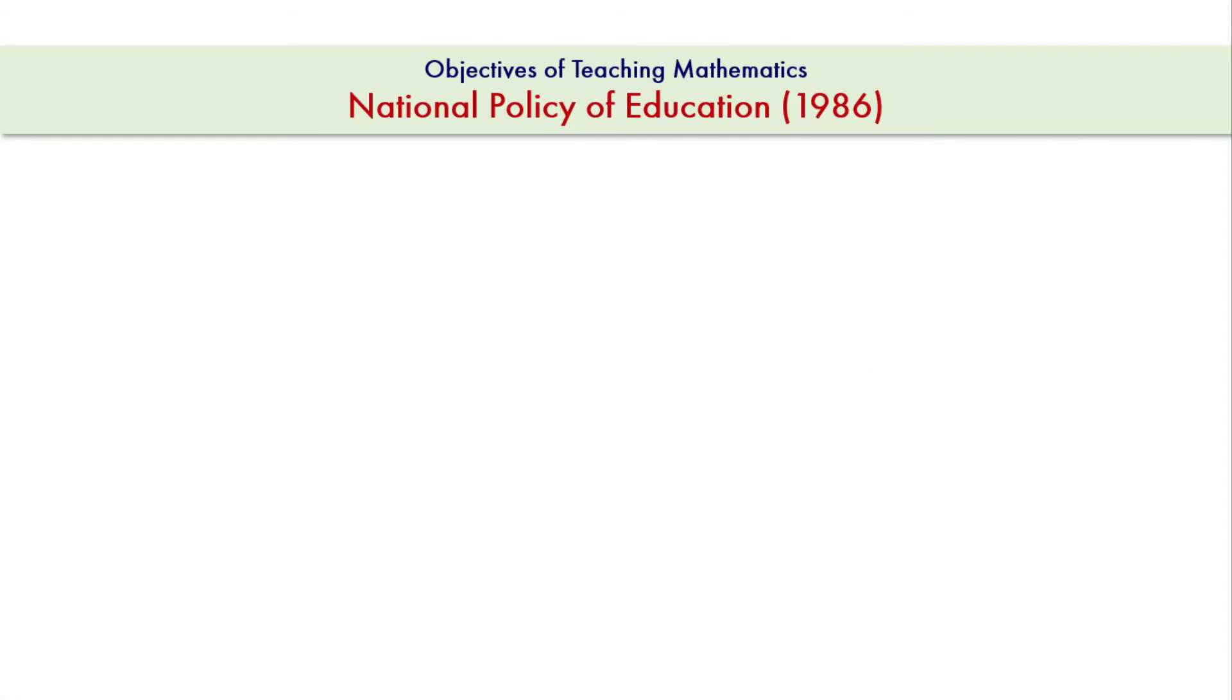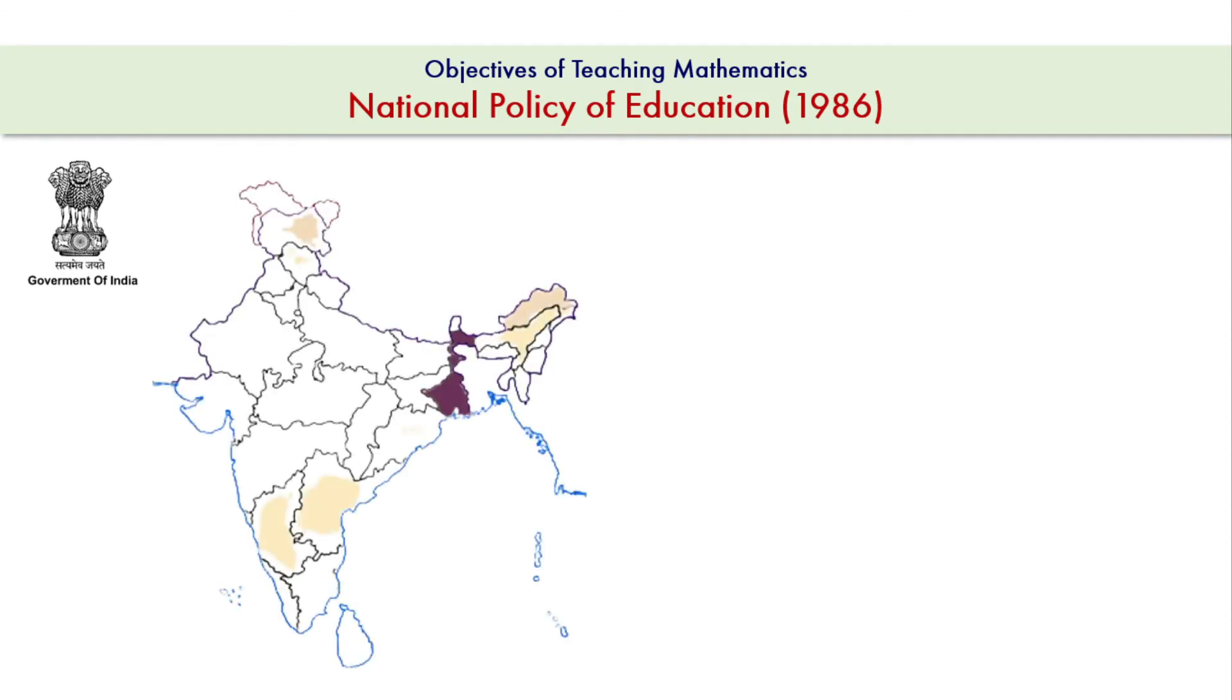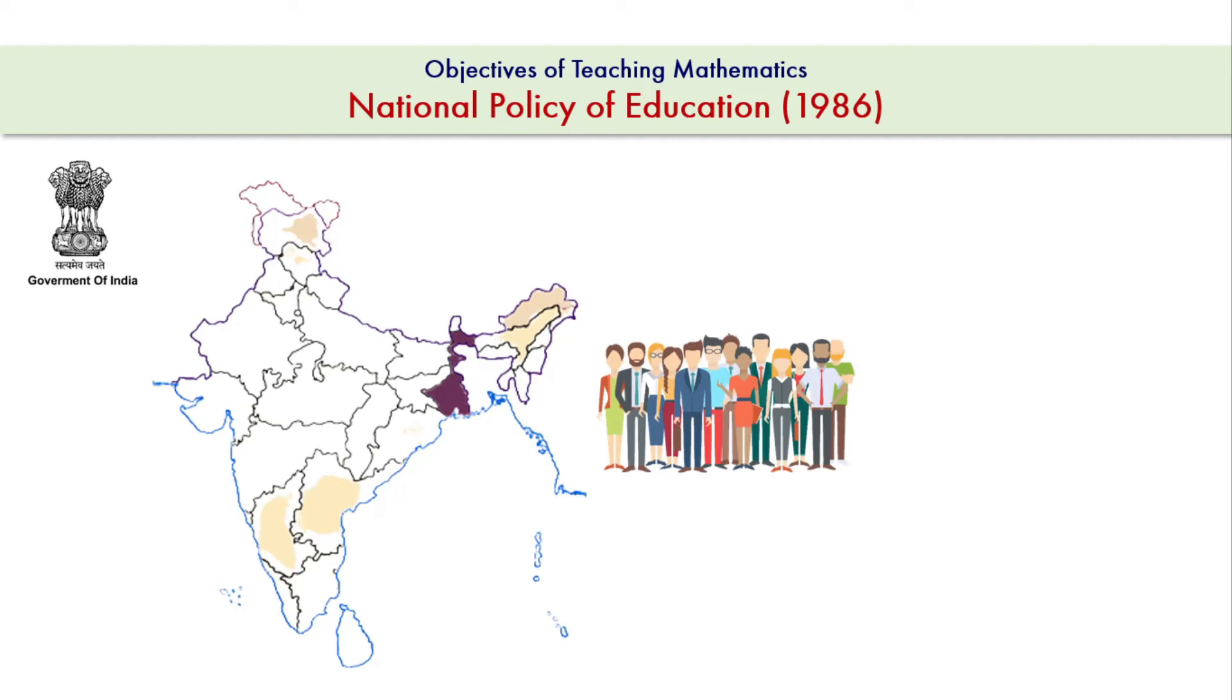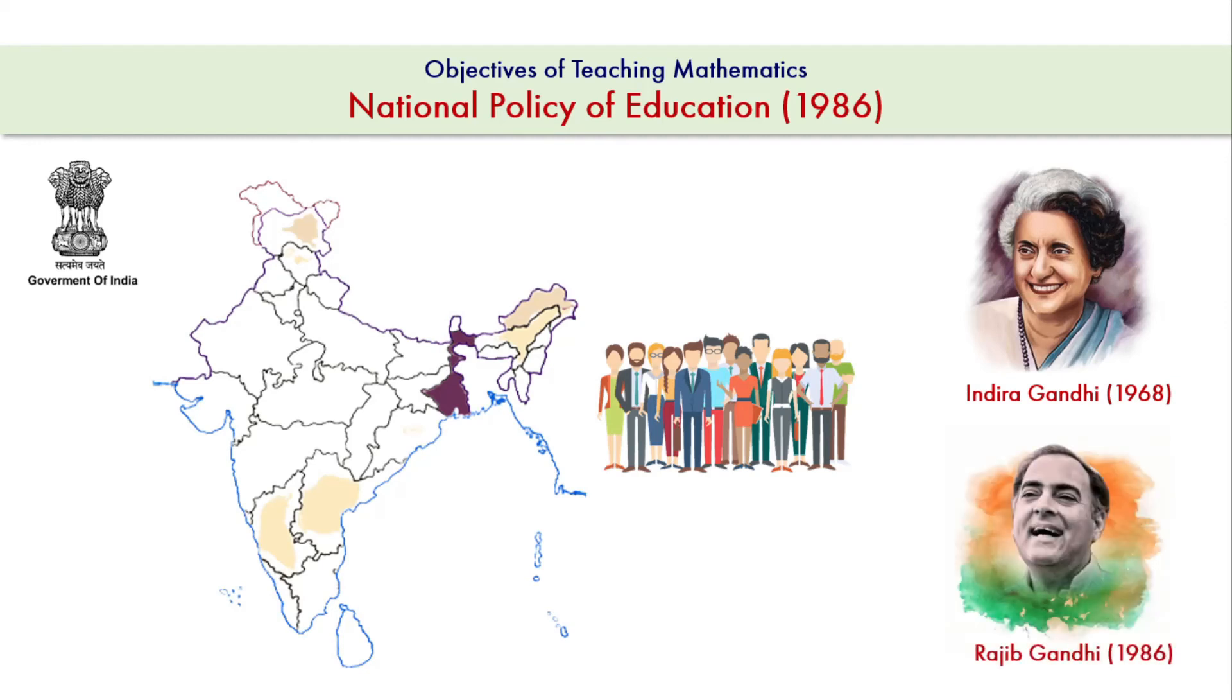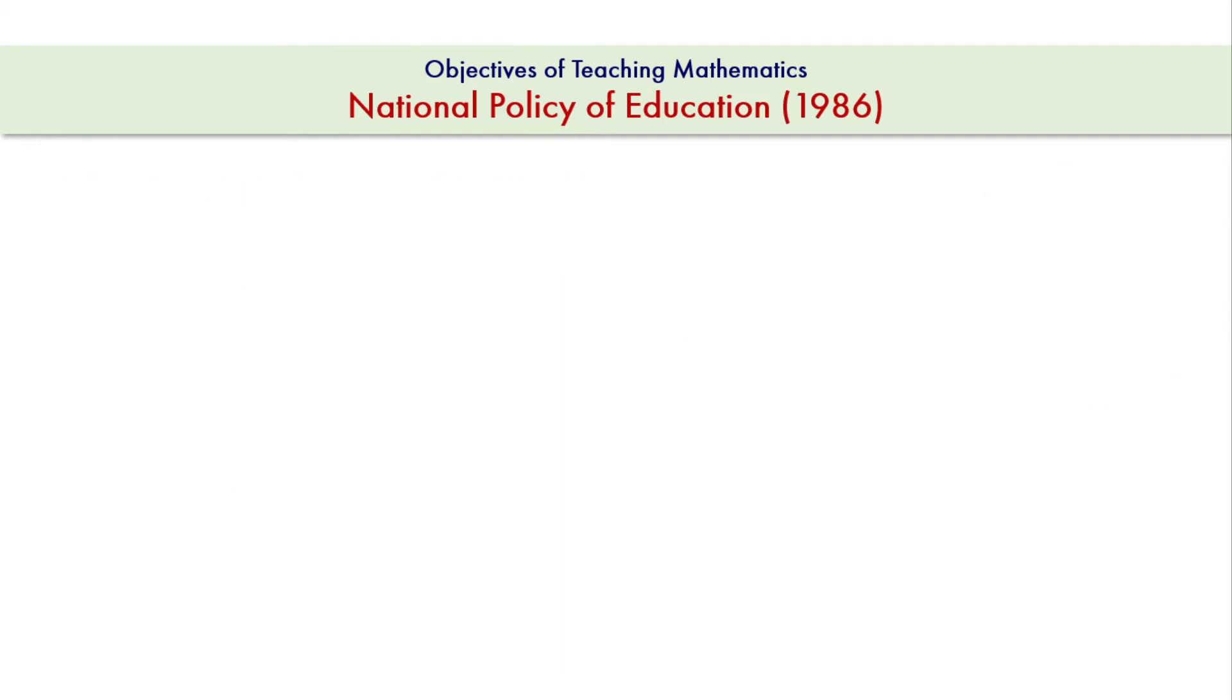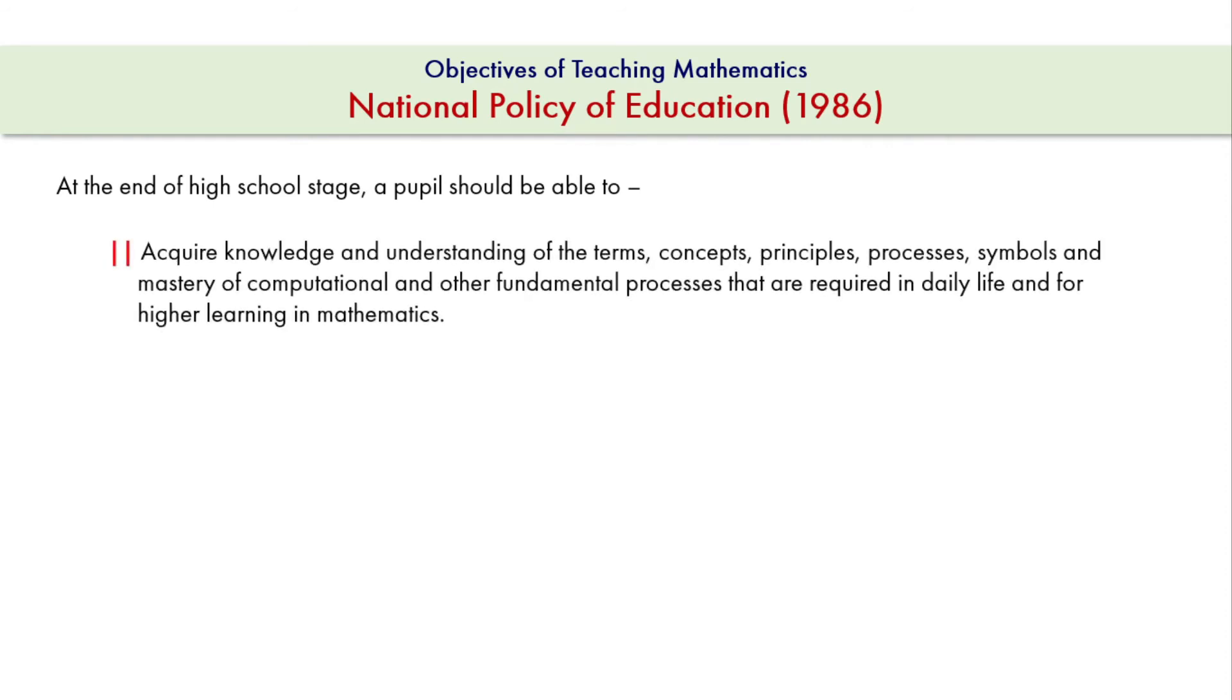The National Policy on Education is a policy formulated by the government of India to promote education amongst India's people. The policy covers elementary education to colleges in both rural and urban India. The first NPE was promulgated in 1968 by the government of Prime Minister Indira Gandhi and the second by Prime Minister Rajiv Gandhi in the year 1986. According to this policy, at the end of the high school stage, a pupil should be able to: